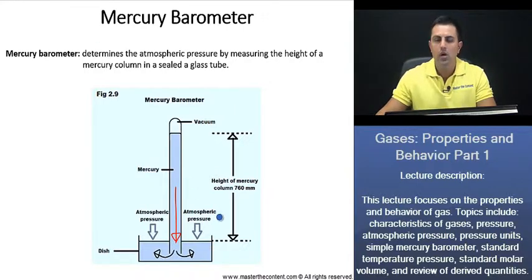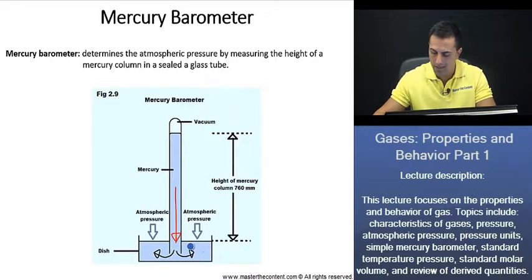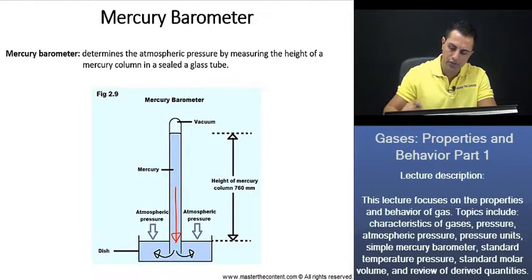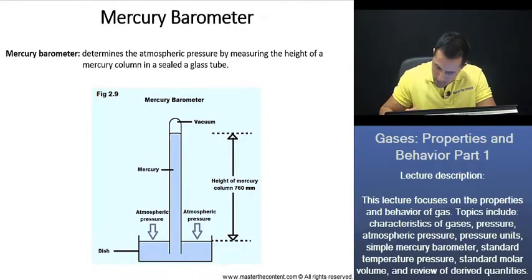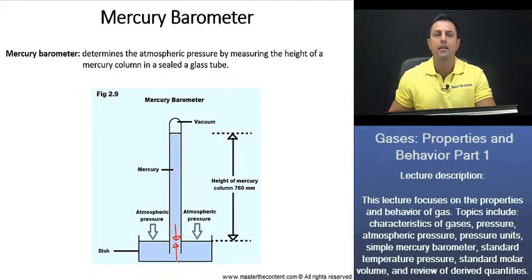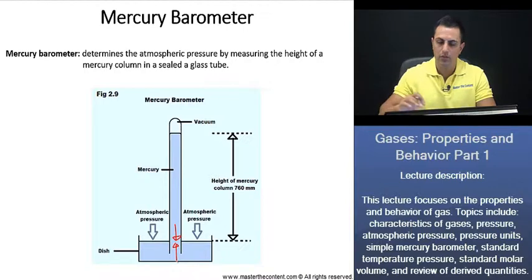If we recall, what is the atmospheric pressure? That's just going to be the weight of the air that's going to push down on the mercury in the dish and push the mercury up the column as follows. Now, after some time, the downward pressure of the mercury inside the glass tube is going to be exactly the atmospheric pressure.